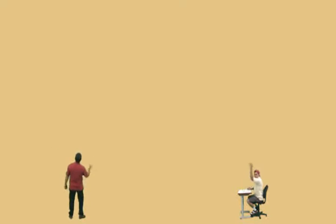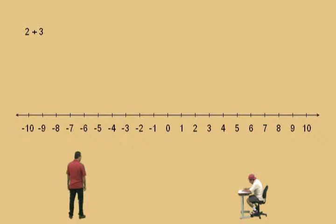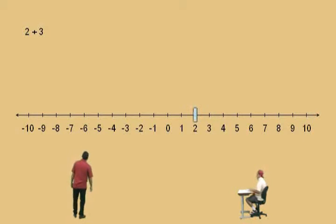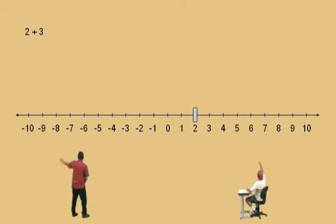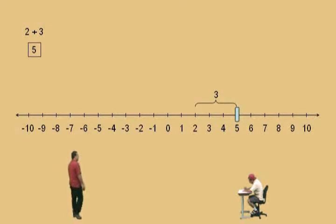Our first problem is right there: 2 plus 3, Charlie. So how do we do 2 plus 3 on a number line? Start at 2, move right 3 — and we move to the right three times, and that gives us 5. Very nice there, Charlie.